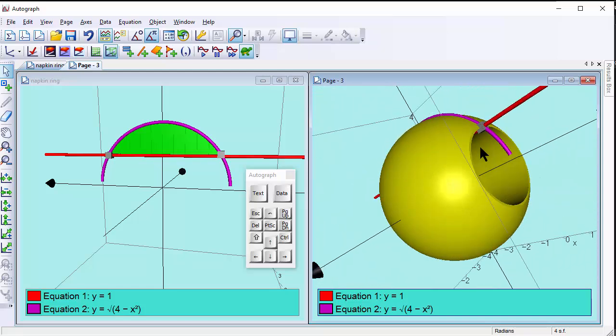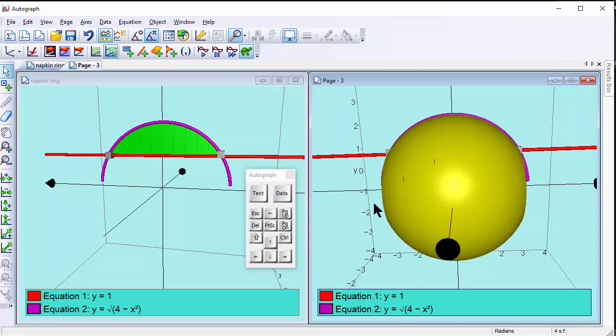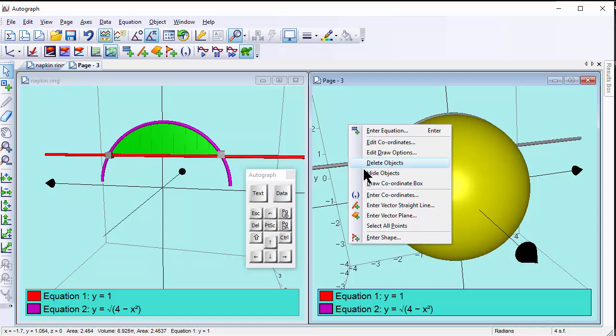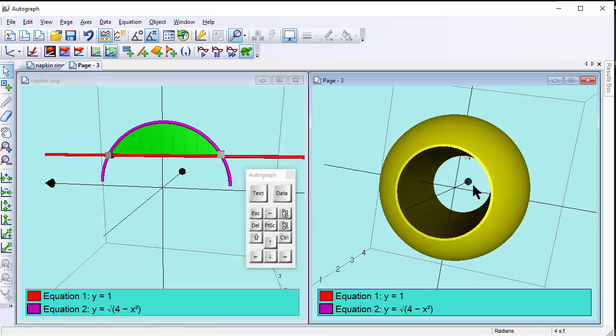And there is our napkin ring looking really good. So all we've got to do now is just hide the bits we don't want and we're done. So select that, select that, and select that, and hide. And there is our napkin.